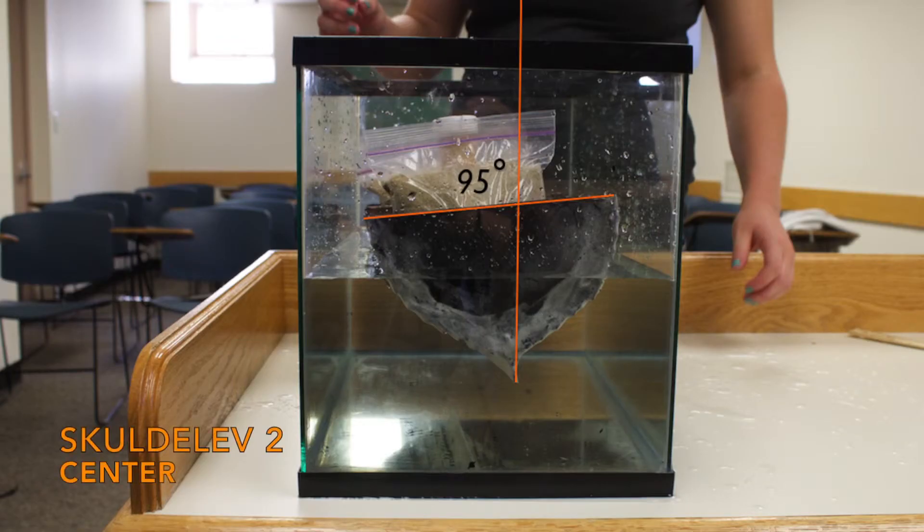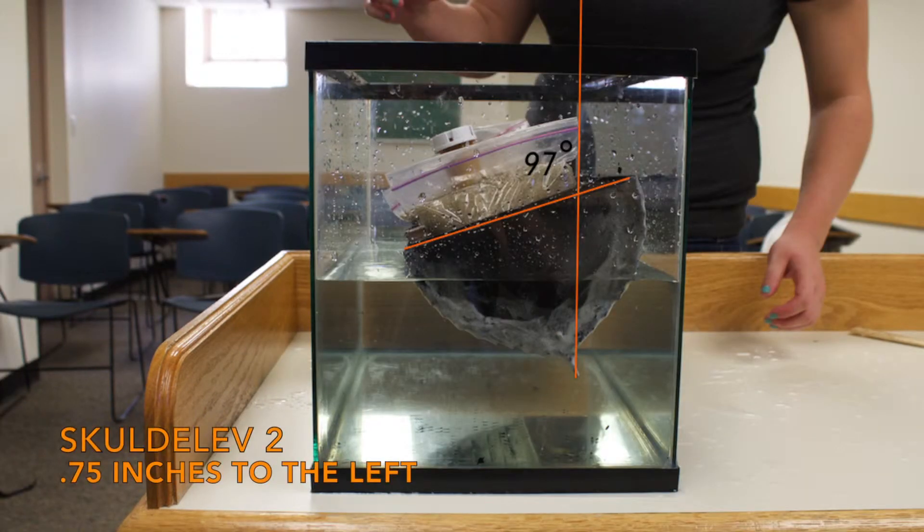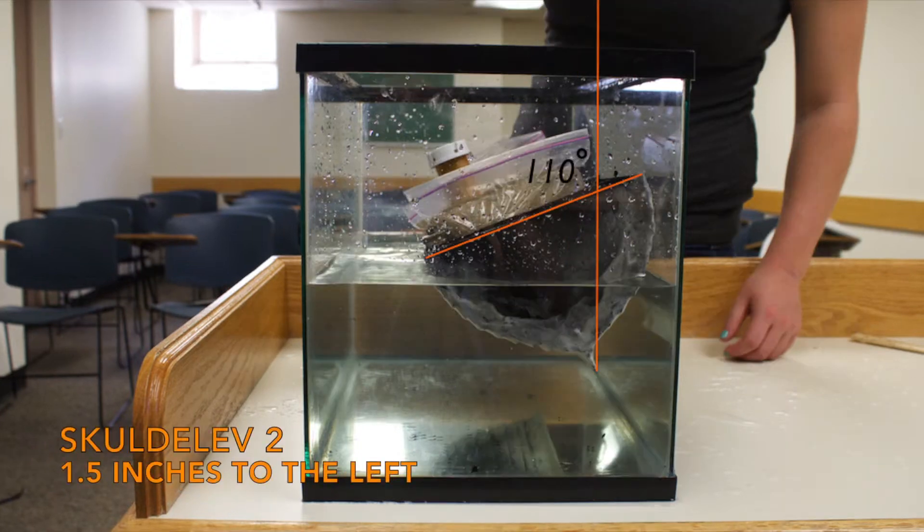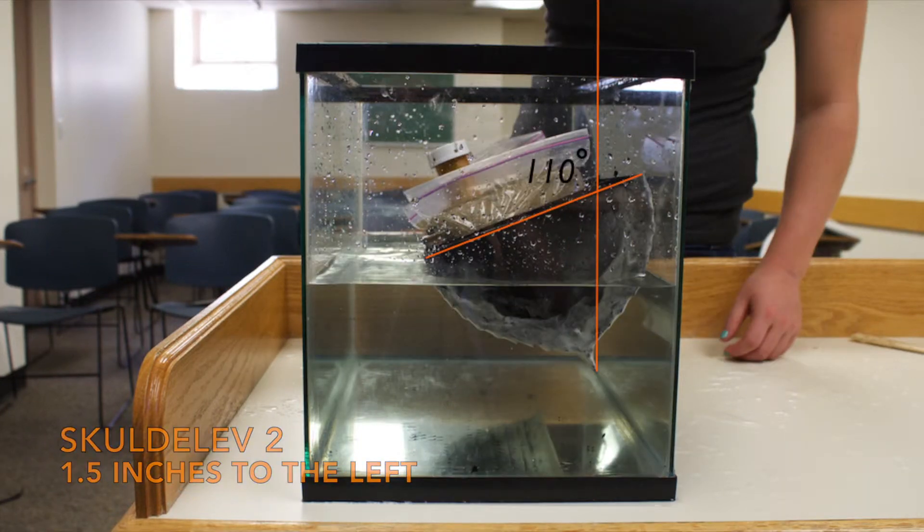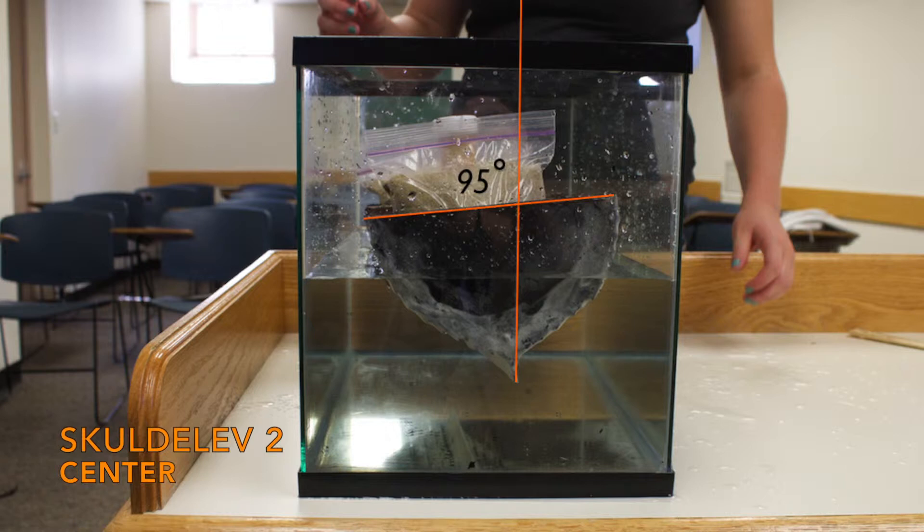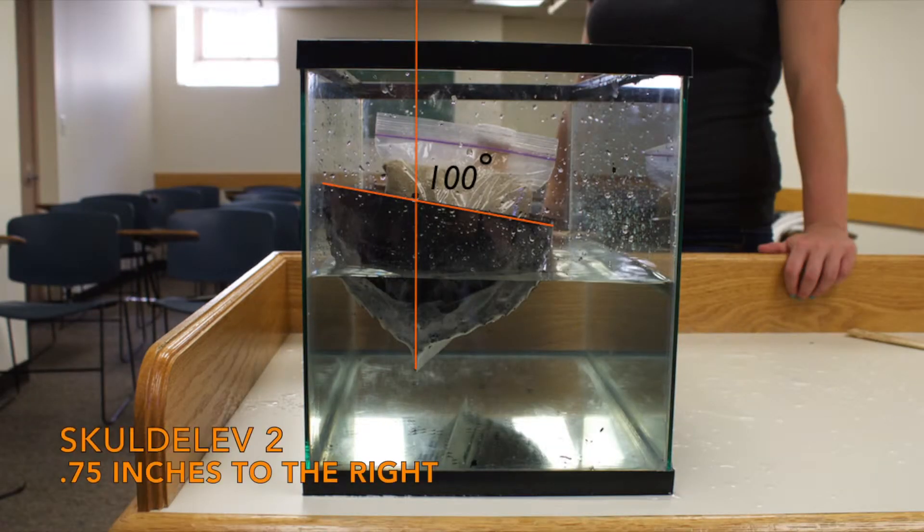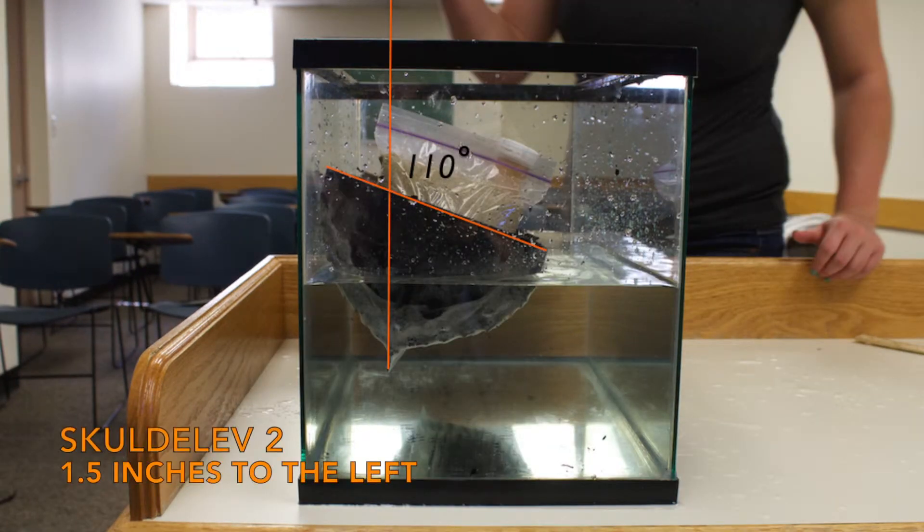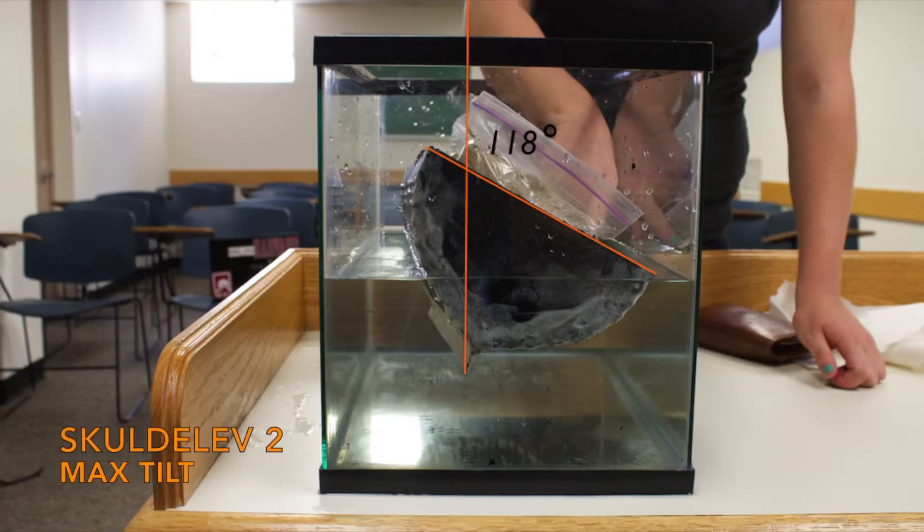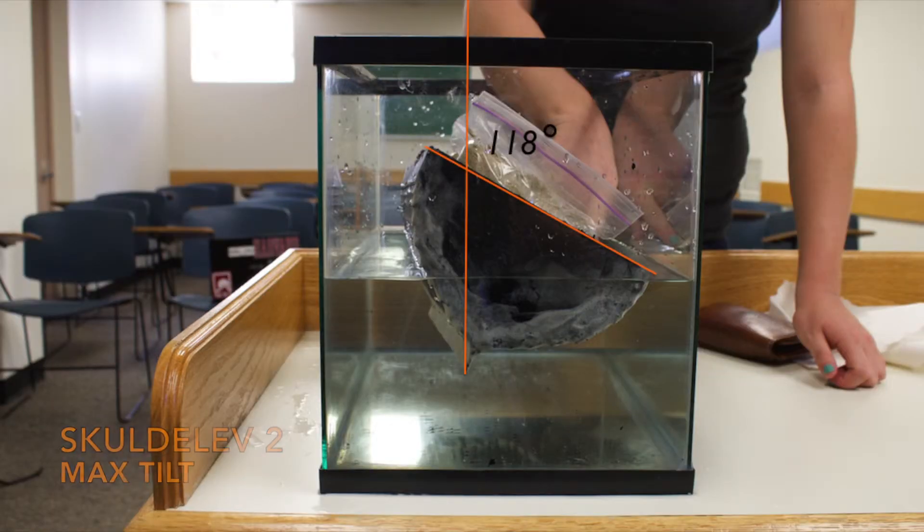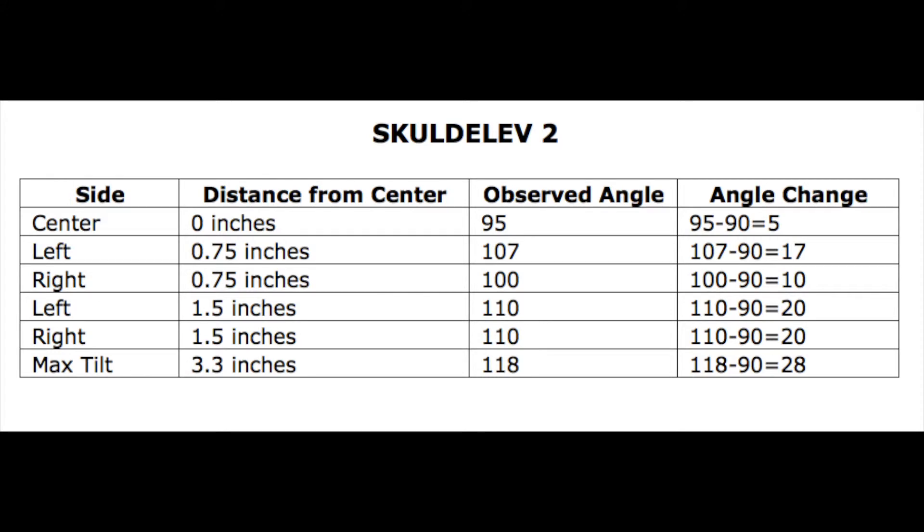Our Skuldelev 2 model was much trickier to test. When placed in the water, the boat would not stay centered and would tilt about 5 degrees to either side. Thus, when we put the weight in the center, the angle was not 90 degrees. Additionally, the narrower hull meant that we had one fewer mark on each side to place the weight. This table shows the results of our trials with our Skuldelev 2 model.